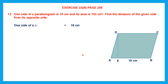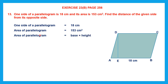What is given to us? One side of the parallelogram and the area of the parallelogram. We have to find the height. Whenever we are asked to find something, make use of whatever is given. We can use the formula: area of the parallelogram equals base into height. Area is 153 centimeter square, and the base is 18 centimeters into height DE, which we don't know.